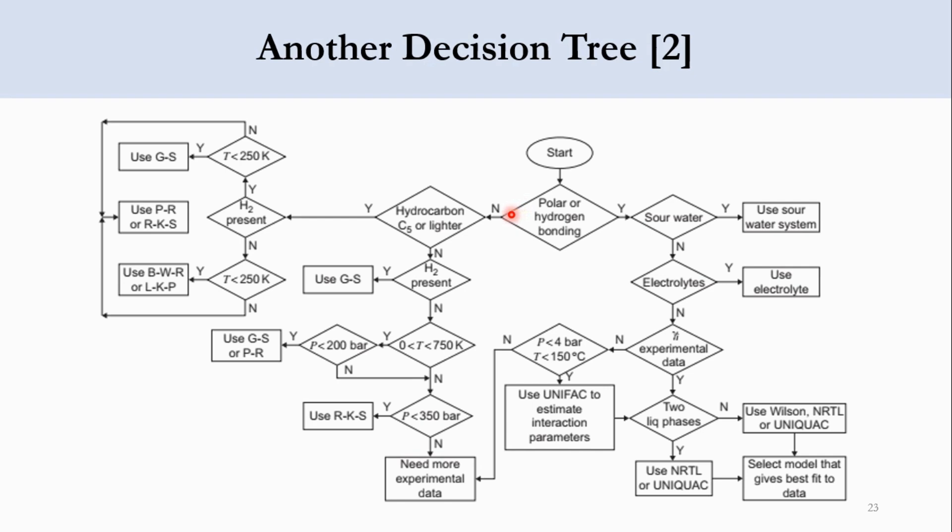The second part is that polar or hydrogen bonding are not available. Then check whether hydrocarbon or light gases are involved. If yes, check whether hydrogen is present. If hydrogen is present, check if temperature is less than 250. If no, use Peng-Robinson or SRK. If yes, use GS, Grayson-Streed method.